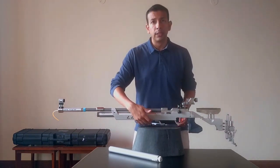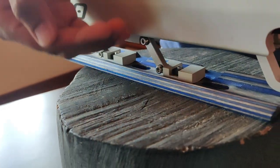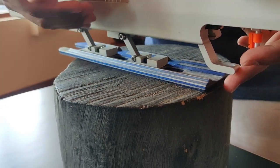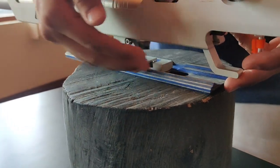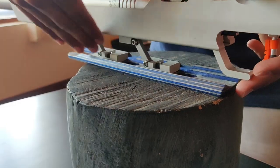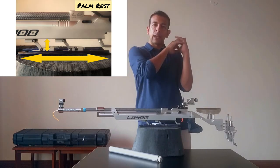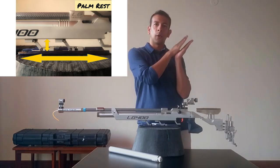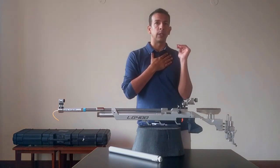This is the palm rest. I can move this up or down. I can change the angles of it. I can move it front or back. Basically, the idea is that my rifle sits comfortably for my left hand if I am a right-handed shooter.